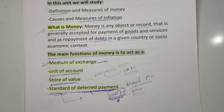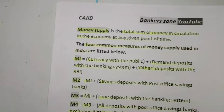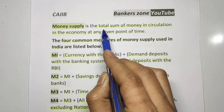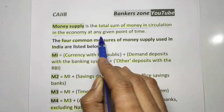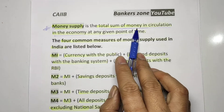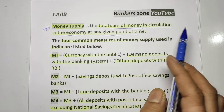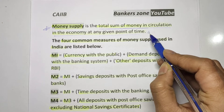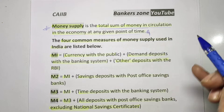Next, what is money supply? Money supply is nothing but the total sum of money in circulation in the economy at a given point of time. For example, if today is the 4th of January, the total money in the economy on that date is nothing but the money supply.